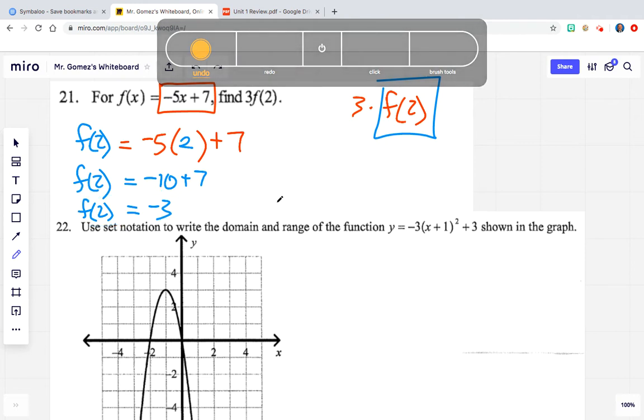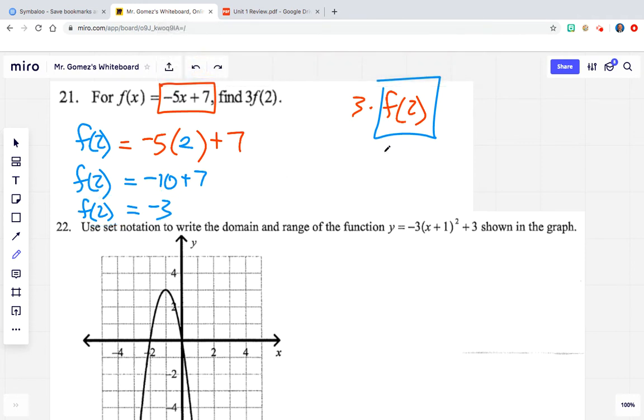So f of 2 is equal to negative 10 plus 7, which is negative 3. So just like on the test, we're going to write it like the following. So f of 2 is equal to negative 3 will be the answer just for that piece, but not for the complete piece. So this is f of 2 being negative 3. So what we're going to do is multiply that by this 3 right here. So we still have this 3 that we're multiplying by the original problem. So this equals negative 9.